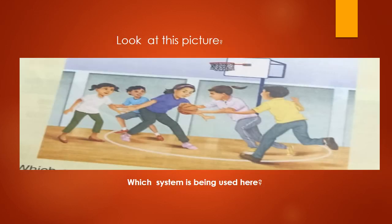Look at this picture — you can see children running to play a game. The question is: which system is being used here? In previous classes you studied that bones and muscles are organs involved in the movement of the body. So as the children are running, the muscular system and the skeletal system are being used here.